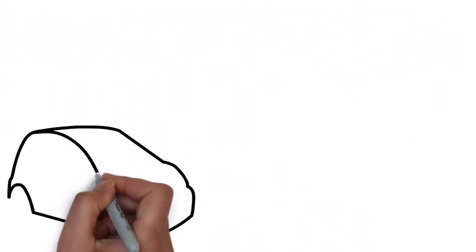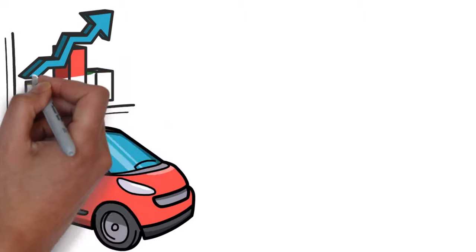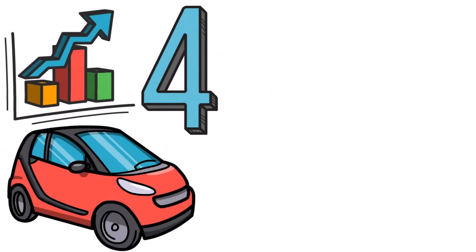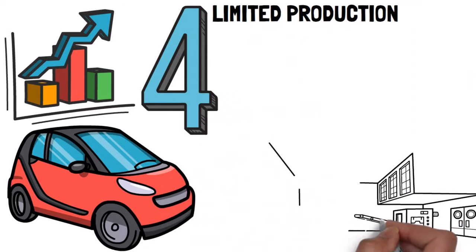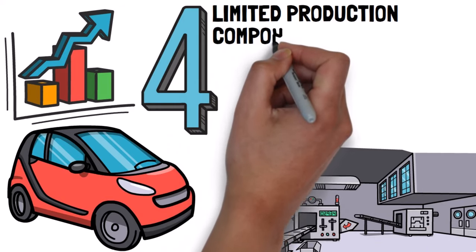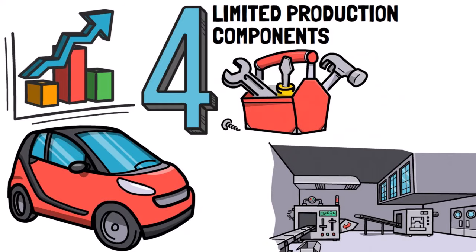As far as why car prices were previously the best performing assets since shorting WeWork, look no further than four main categories that are soon coming to an end, with the first being limited production. In order to actually manufacture a vehicle, you need all the necessary components, and one of those is a little-known piece that many people forget about – chips.